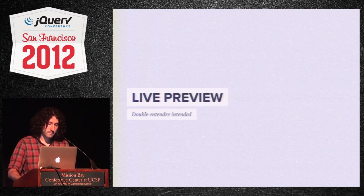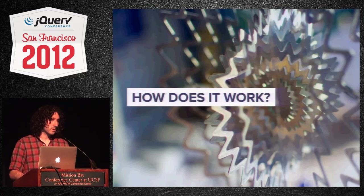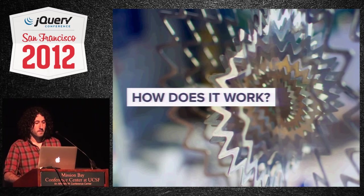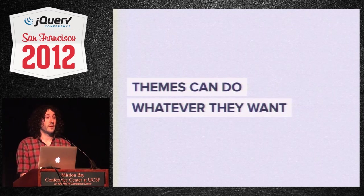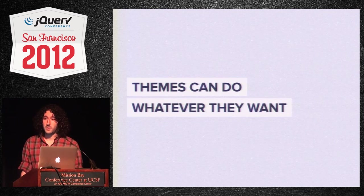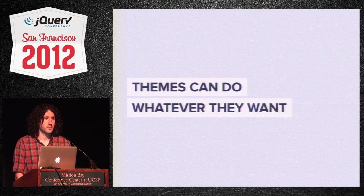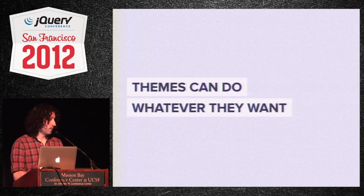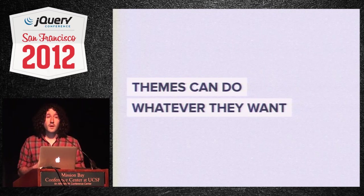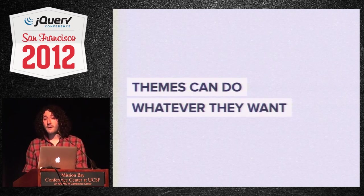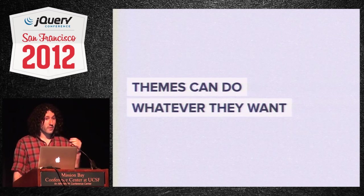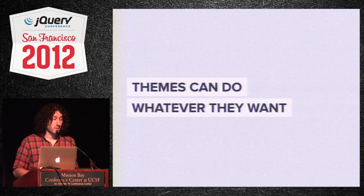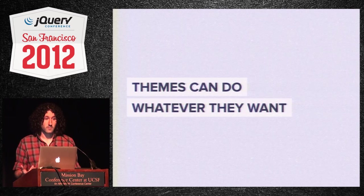How does it work? The most important thing to know is that themes can do whatever they want. WordPress themes can run PHP — probably the last time I'll mention PHP in this talk. This means if they want to blow everything up that's fine, but we have no way of just saying 'recompile a template.' We have to hit the server. That preview you saw was hitting the server and refreshing behind the scenes.